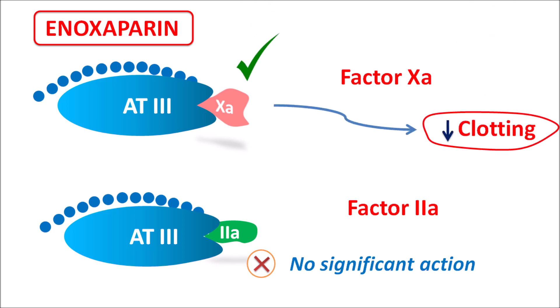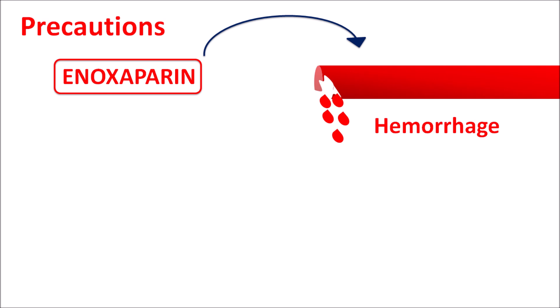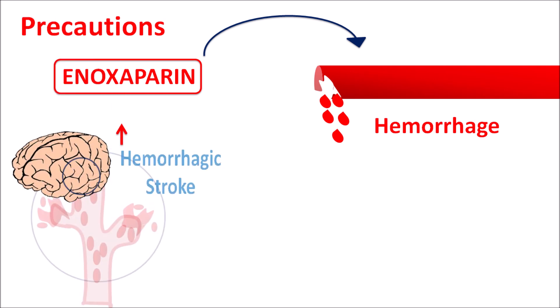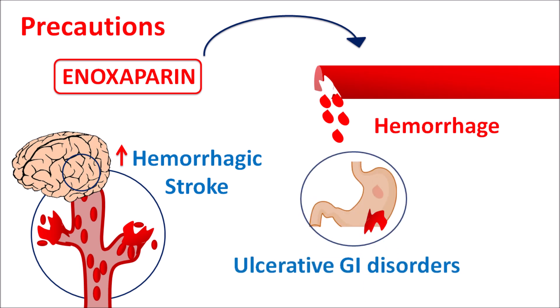One important precaution is that as an anticoagulant, enoxaparin increases the risk of hemorrhage. It can cause hemorrhage within the CNS, resulting in hemorrhagic stroke, which is a very serious complication. Enoxaparin should be given carefully in patients at risk of hemorrhagic conditions. It can also increase the risk of bleeding in ulcerative GI disorders, so caution is required in those patients as well.